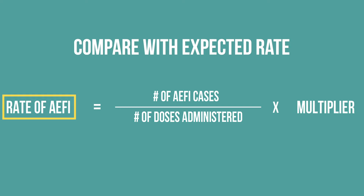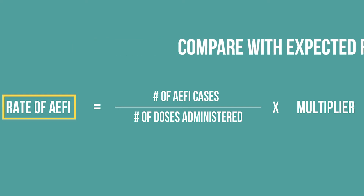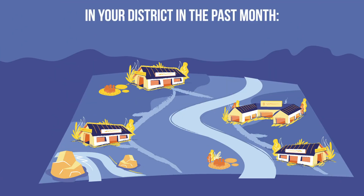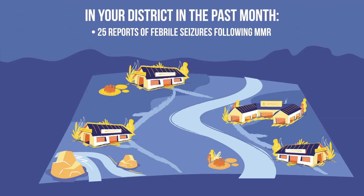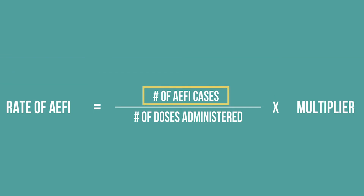Let us walk through an example. In your district there were 25 reports of febrile seizures following MMR vaccination in the past month. During this period, 12,350 MMR doses were administered. First, record the number of AEFI cases that have been reported for a particular vaccine.